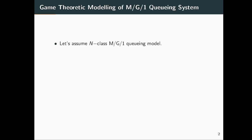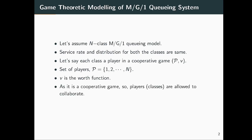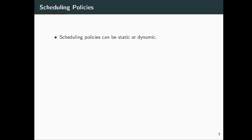We are using the most generic queuing model, which is MG1. Assume an n-class MG1 queuing model where both classes have the same service rate and distribution. Let P,V be the cooperative game where P is the set of players 1 to n, V is the worth function, and players or classes are allowed to collaborate. We assume it is a transferable utility game with worth for the null coalition equal to 0.